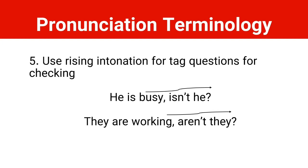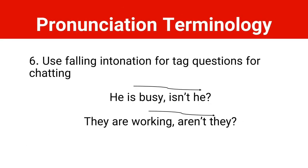Rule number five: we use rising intonation for tag questions when checking information, to verify if it's true or not. For example: 'He's busy, isn't he?' 'They're working, aren't they?' But if we are chatting with someone using tag questions, we can use falling intonation. So rising intonation is for checking information, and falling intonation is for chatting.